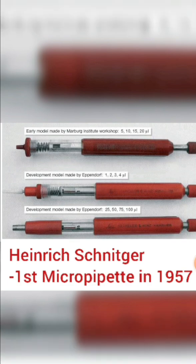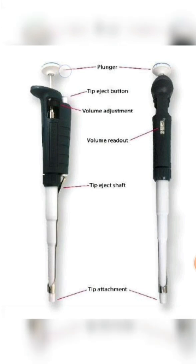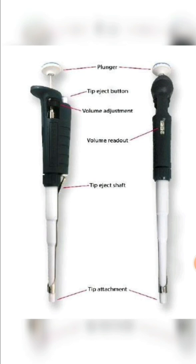This is today's modern micropipette. The plunger is used to uptake and release the exact volume. Pipette tips are attached at the bottom, allowing us to uptake the required amount of volume by pressing the plunger. To release into another container, press the plunger again. After uptake and release, the pipette tip is ejected using the tip ejector button, and a tip eject shaft releases or discards the pipette tips.